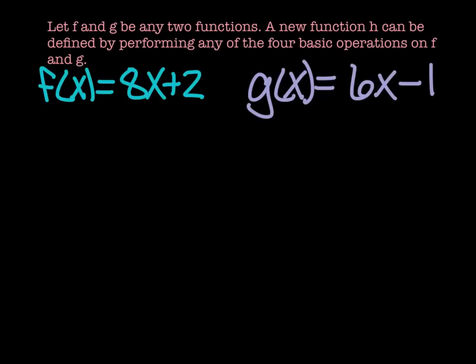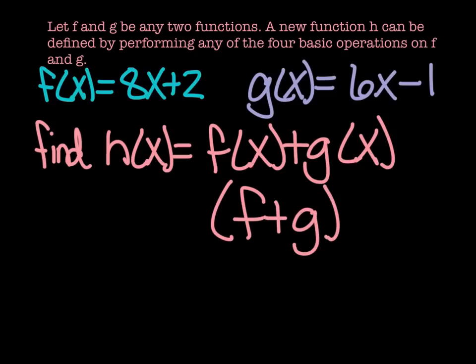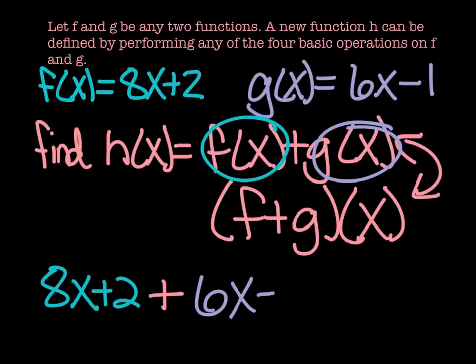We're going to do a few examples on these two functions. f of x equals 8x plus 2, and g of x equals 6x minus 1. So if I wanted to find h of x equals f of x plus g of x, and another way this could be written is f plus g in parentheses, then x like that. It means the same thing. Take the f function and add it to the g function. So we're going to take 8x plus 2, plus 6x minus 1. You just combine like terms: 8x and 6x is 14x, and plus 2 minus 1 would be plus 1. So our h of x is 14x plus 1.